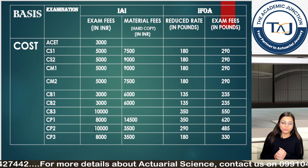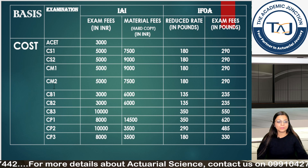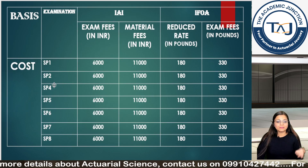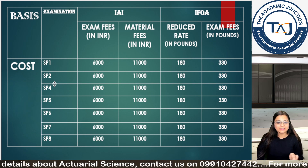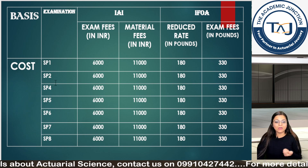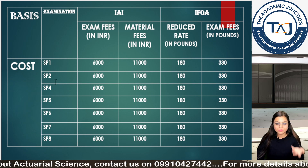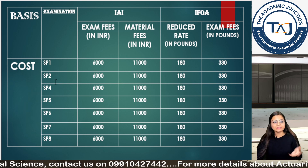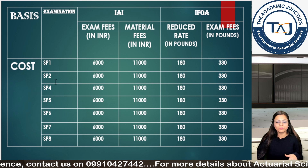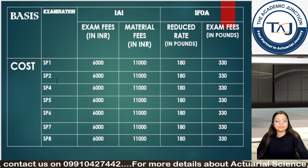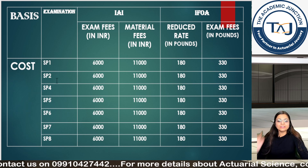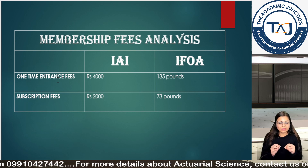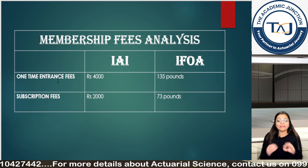For SP subjects, the II exam fee is 6,000 and the material is roughly 11,000, totaling about 17,000 rupees. For IFOA under reduced rate, it becomes around 18,000 rupees. If you do not fall under reduced rate eligibility, the IFOA exam fee shoots up to 330 pounds.